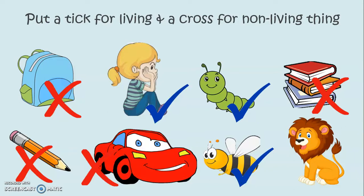Now comes the lion — king of the jungle! What do you call a lion's baby? It's a cub. So a lion can grow, reproduce, breathe and move around the entire jungle. So the lion is a living thing.